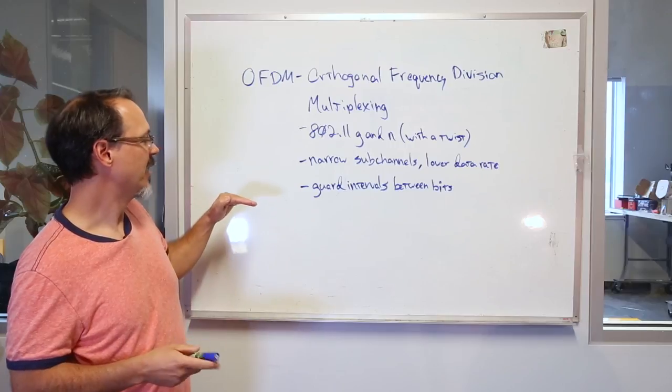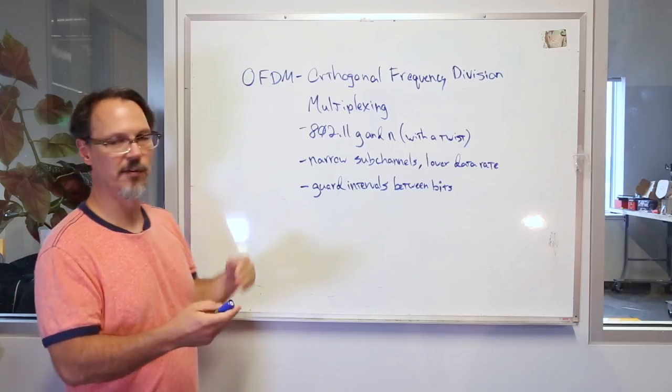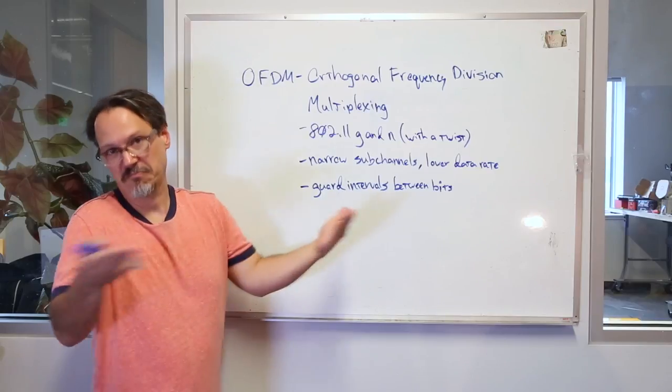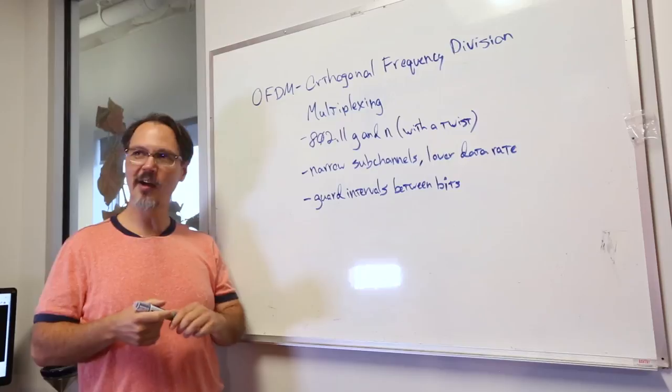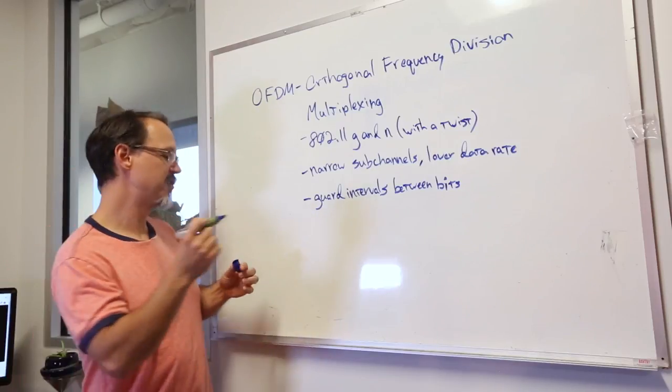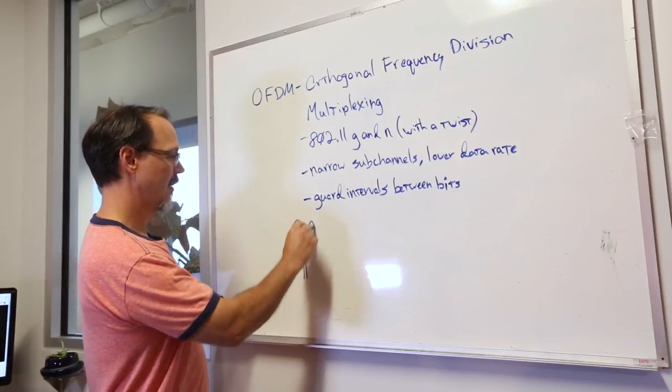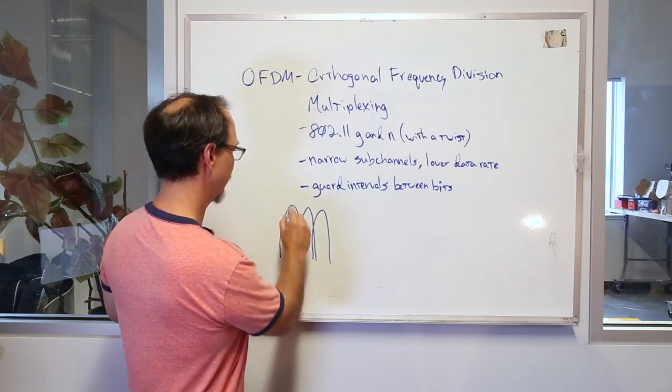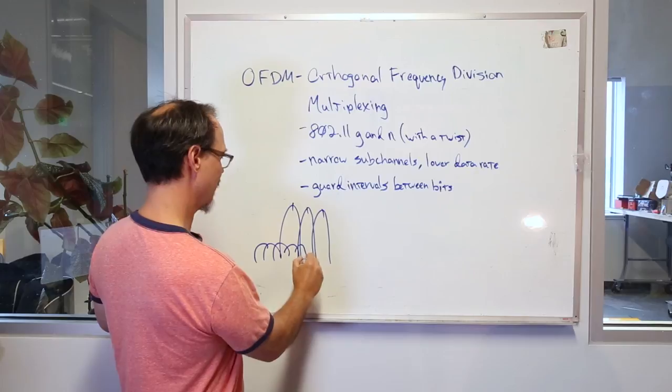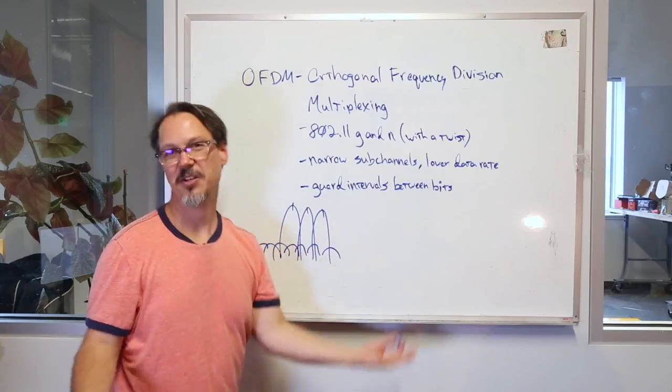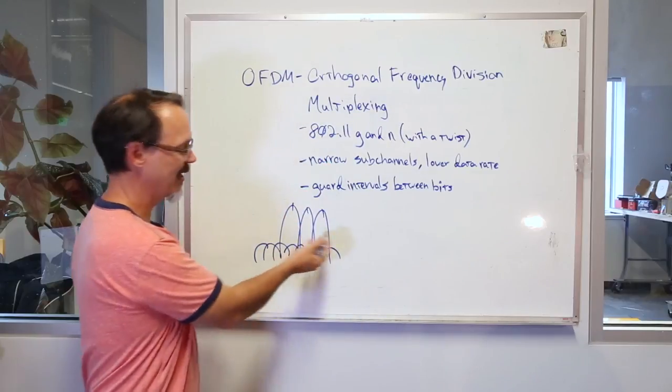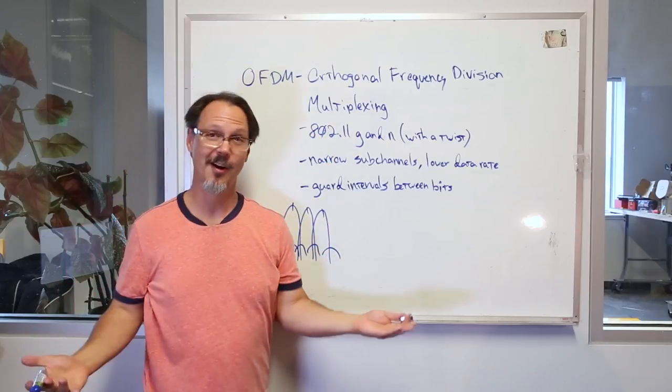Now what this also allows is to have guard intervals between the bits, which helps to reduce inter-symbol interference, which makes it more resilient. The reason it's called orthogonal is because these individual channels are spaced in such a way that their peaks don't interfere with each other and their side bands don't interfere with each other. So it's orthogonal, they don't interfere. That's how it's supposed to work. That's why it's called orthogonal.